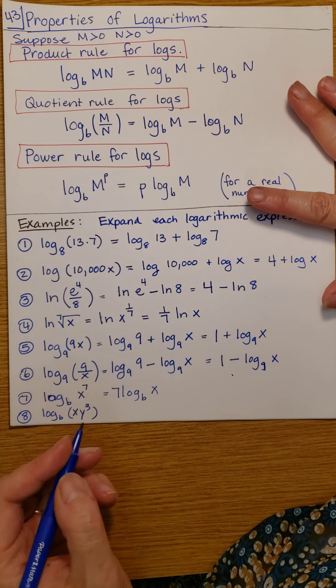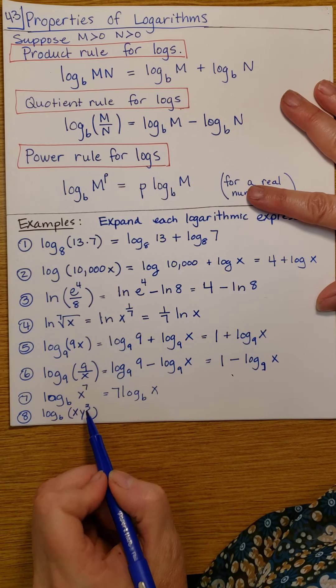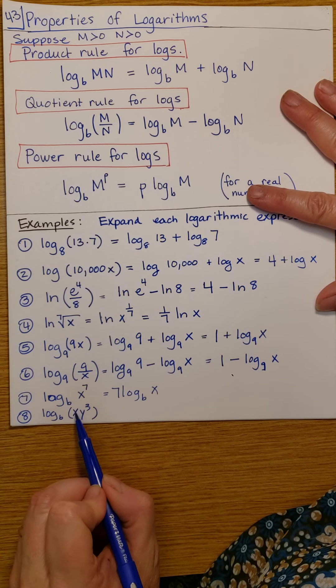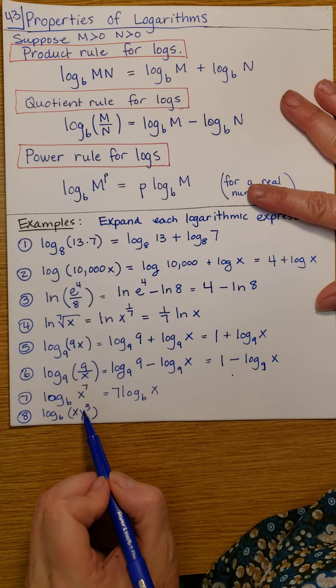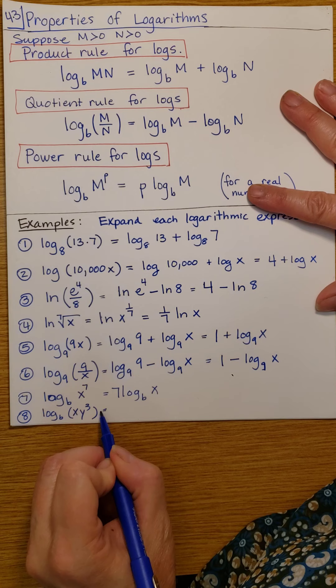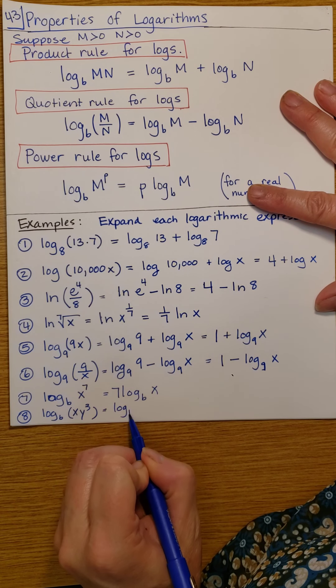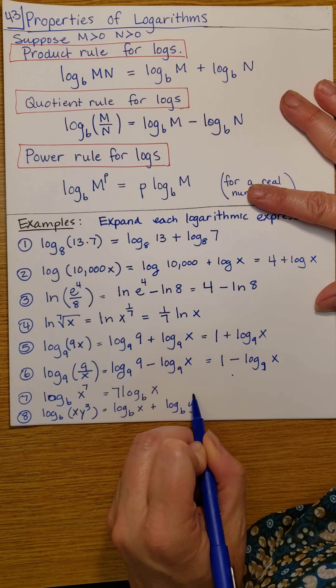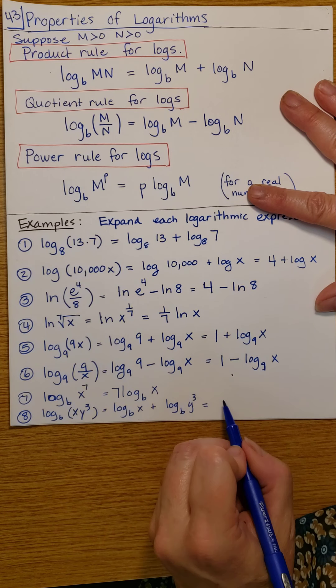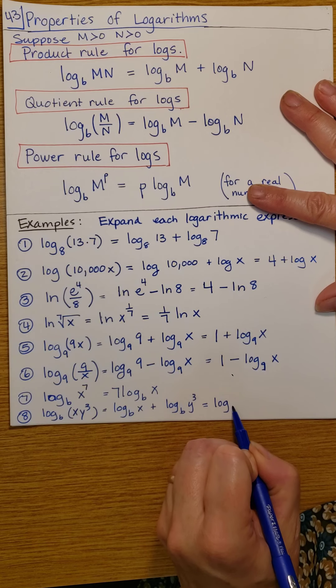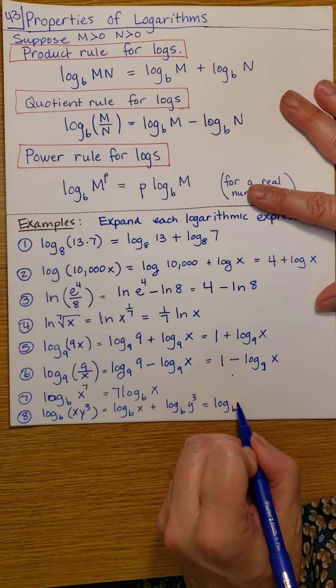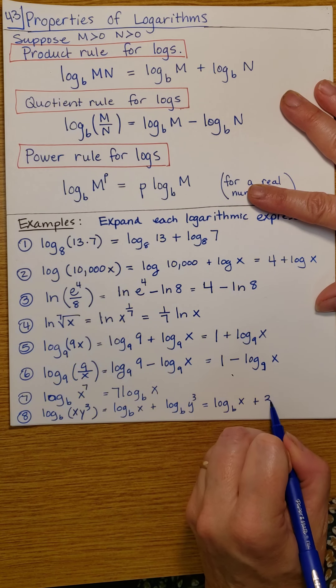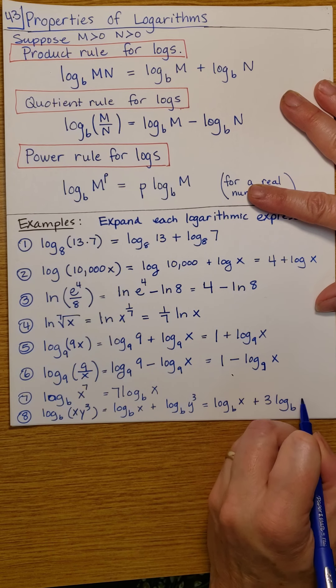Here we have a product and a power. But before I can reach that power, because the power is not on both x and y, it's simply on y itself, I need to separate this. So this is going to become log b of x plus log b of y cubed. And now I can go ahead and bring that 3 out front, and it becomes log b of x plus 3 log b of y.